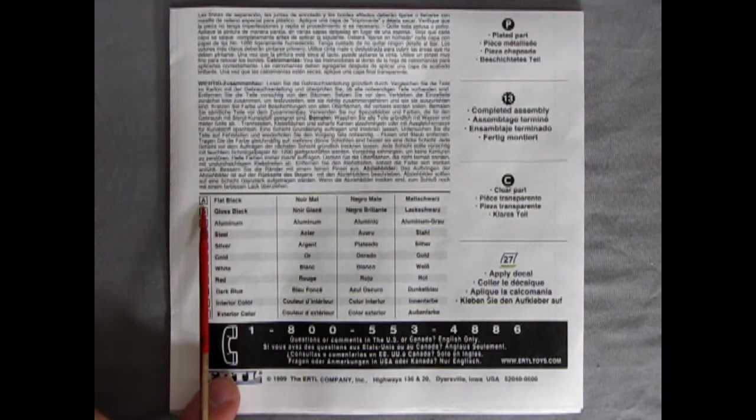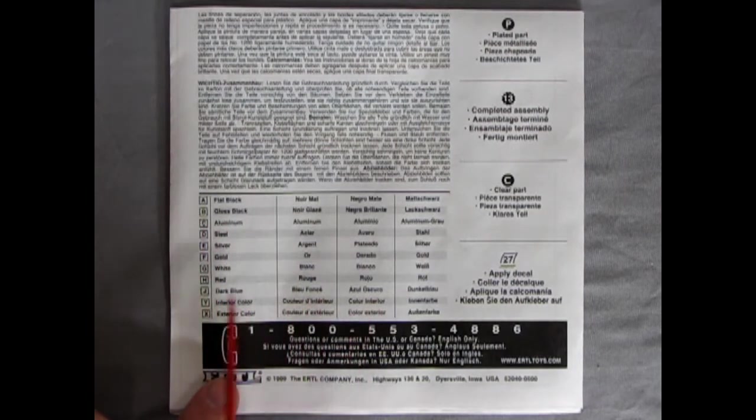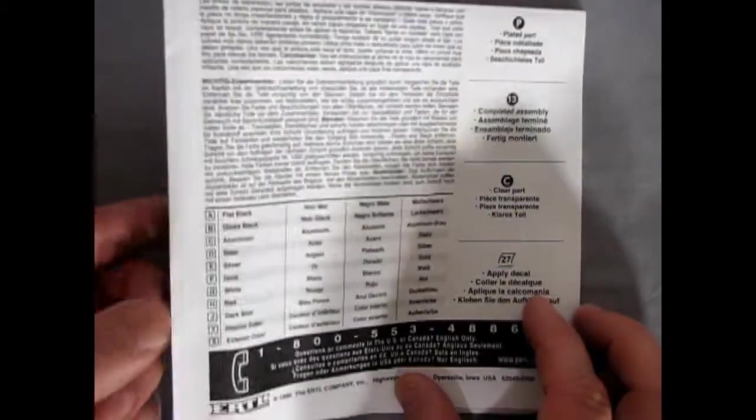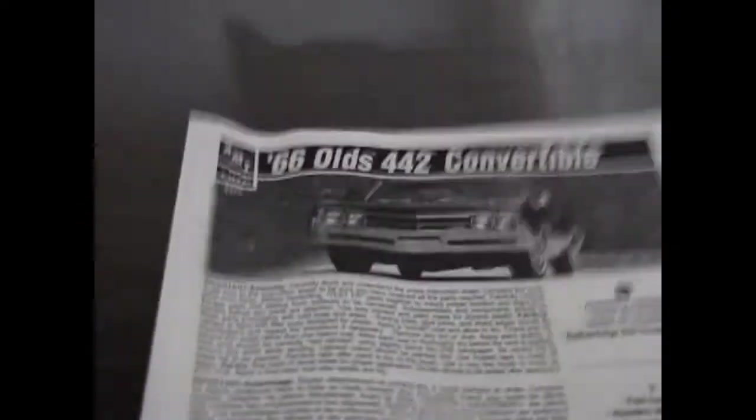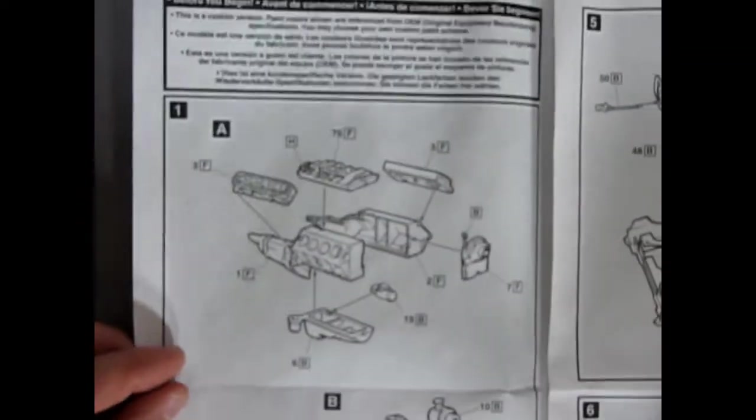But here we get a full paint code chart of what we have. So for example the letter A is flat black, B is gloss black, etc, etc as we go down. So we have to look for these little squares through our instructions to know what colors to paint the model with. So as we open this up basically just a two panel fold.